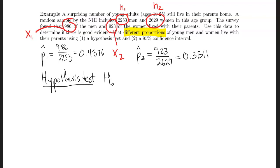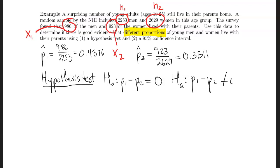Our null hypothesis is that the two proportions are the same, or that their difference equals zero. Our alternative hypothesis, since we're asking whether the proportions are different, is that their difference is not zero — not greater than or less than, just different.